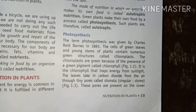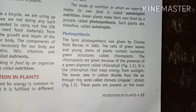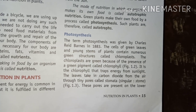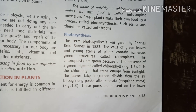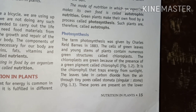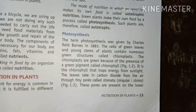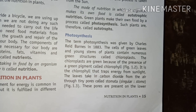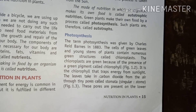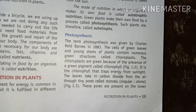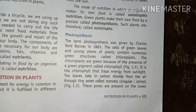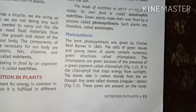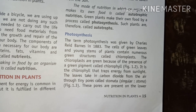Chloroplasts are green because of the presence of a green pigment called chlorophyll. It is the chlorophyll that traps energy from sunlight. The leaves take in carbon dioxide from the air through pores, using chlorophyll to capture sunlight energy.